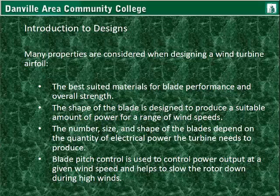Introduction to designs. There are many properties considered when designing a wind turbine airfoil. The best-suited materials for blade performance and overall strength must be considered — with larger blades reaching tip speeds of over 145 miles per hour, reinforced lightweight fiberglass or other composite materials are needed. Smaller designs might use wood, plastic, or metal — it just depends. The shape of the blade is designed to produce a suitable amount of power for a wide range of wind speeds, since wind is never constant throughout the day.